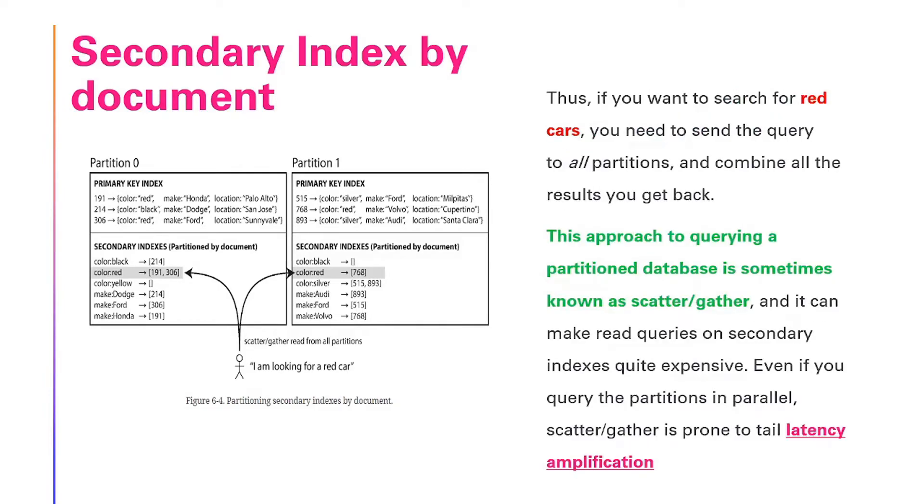Thus, if you want to search for red cars, you need to send the query to all partitions and combine all the results you get back. This approach to querying partition database is sometimes known as scatter-gather, and it can make read queries on secondary indexes quite expensive. Even if you query the partitions in parallel, scatter-gather is prone to tail latency amplification.